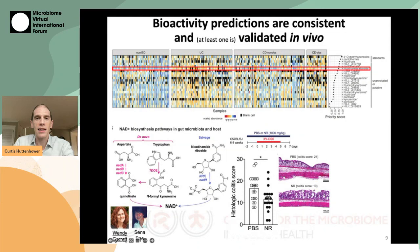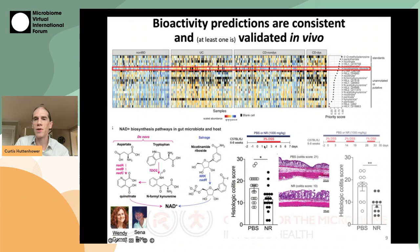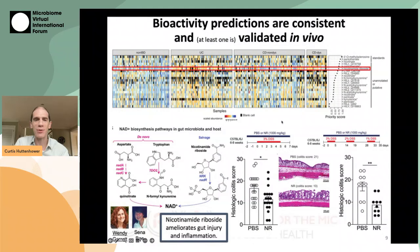Out of several different endpoints, the one shown here is a histologic colitis score in which DSS-treated mice exposed to nicotinamide riboside had overall better histological outcomes in both the acute and chronic model of DSS exposure. So this is at least one case in which one of our prioritized compounds was correctly identified by the prioritization and experimentally validated in a really nice in vivo model system.